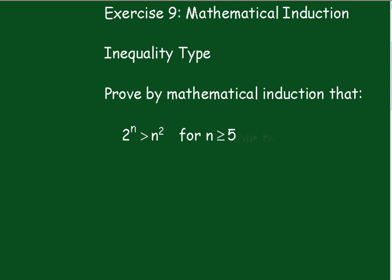Exercise 9, Mathematical Induction, Inequality Type. Prove by Mathematical Induction that 2 to the n is greater than n squared, for n greater than or equal to 5.